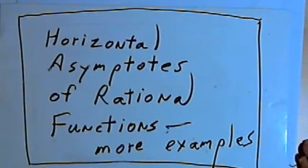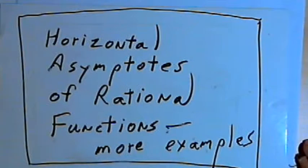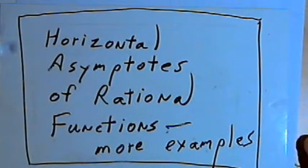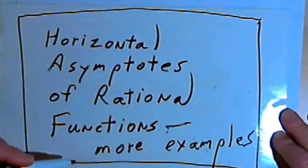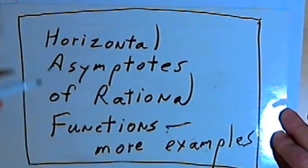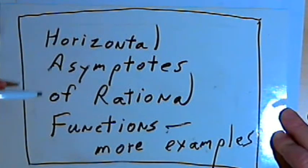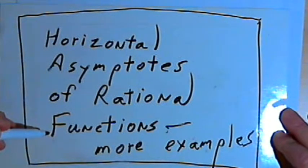This video is provided as supplementary material for courses taught at Howard Community College. In this video, as a follow-up to a previous video, I want to give a few more examples of horizontal asymptotes of rational functions.